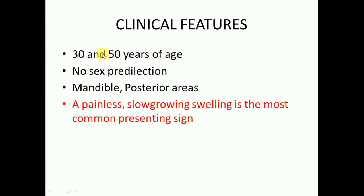Now we'll discuss about clinical features. It is most commonly present in patients who are 30 to 50 years of age. There is no sex predilection in Calcifying Epithelial Odontogenic Tumor. It is most commonly present in the mandible, particularly in the posterior areas. There will be painless slow-growing swelling, which is the most common presenting sign.